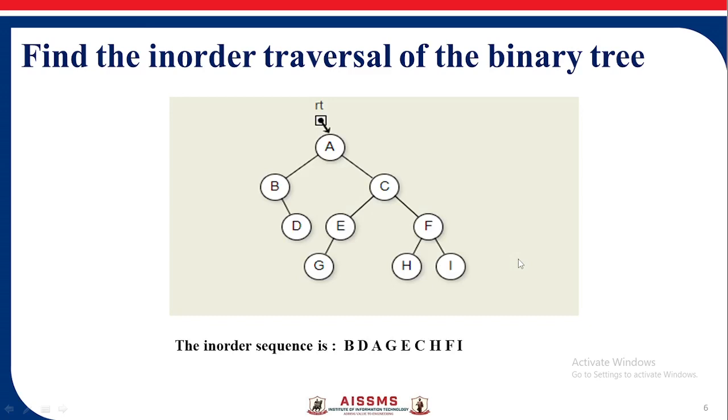In the next example, we need to find out the in-order traversal of the binary tree. Here we will first see left part, then root, then right part. Left part to the left of B, nothing is there, so left-root means B, then right means D, then root A. To the right side, left G, then root E, then C, H, F, I. So the in-order sequence is B, D, A, G, E, C, H, F, I.